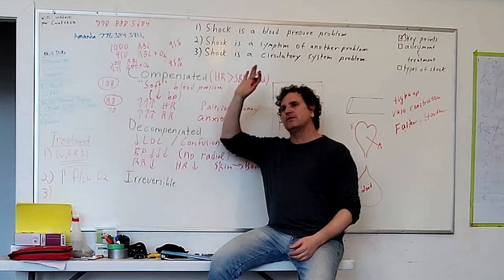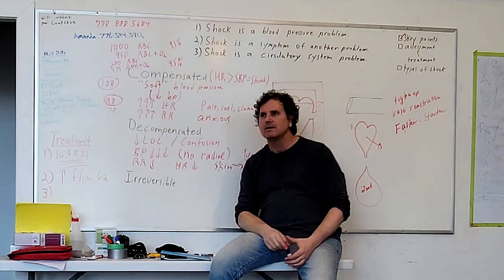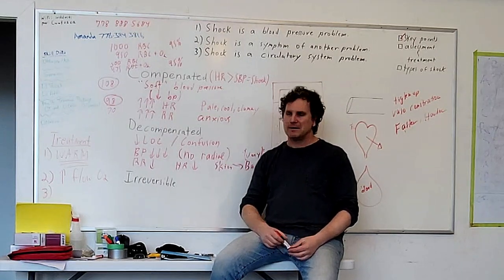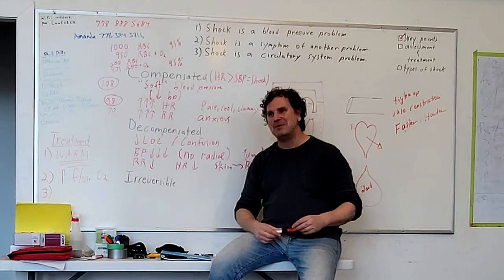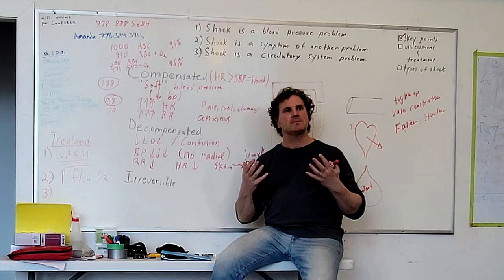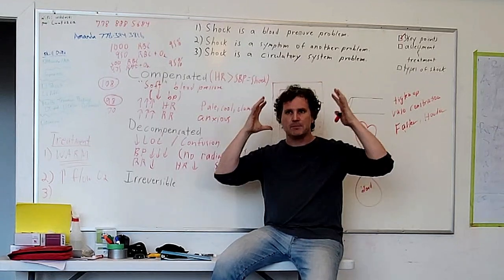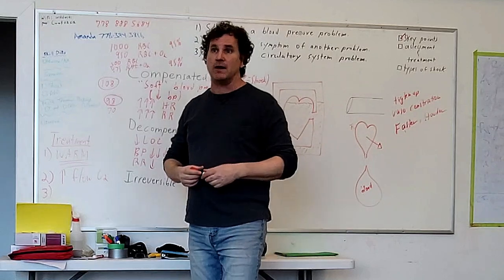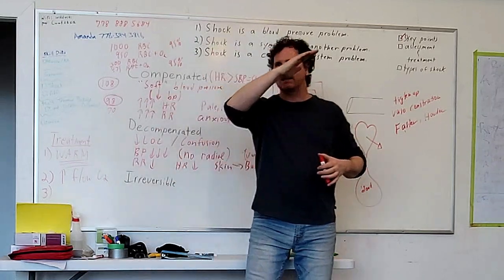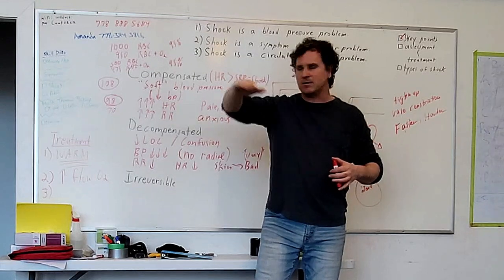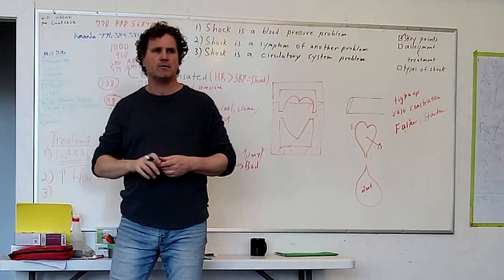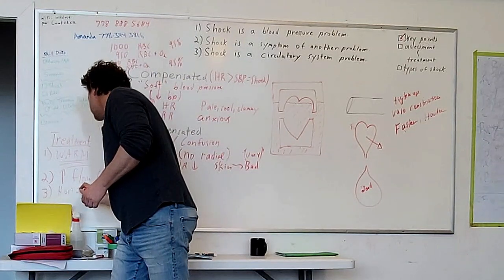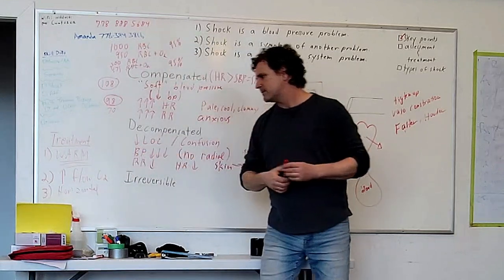Going back to the three-story house analogy: if there's not enough water pressure for the shower on the third floor, you go to the main floor or basement. The same principle applies here — the most important part of the body that needs to be perfused is the brain. We need to keep them horizontal. I'll use 'horizontal' because recovery position is fine too — as long as we're not making the body work uphill. If level of consciousness decreases, the recovery position remains appropriate.